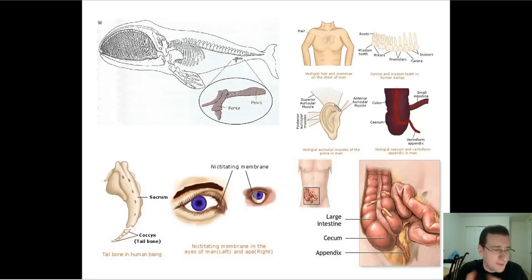The appendix, for an example. The nictitating membrane in the eyes of humans. The sacrum and the tailbone in humans. We no longer need it. Some of our tail is still left over there. The femur and the pelvis, which is still left in some of the whale species, and so forth.